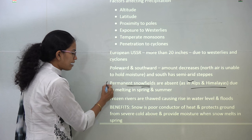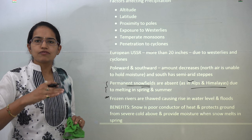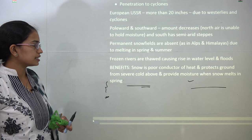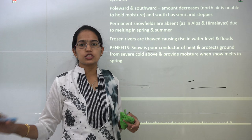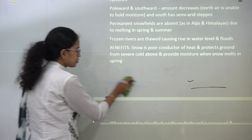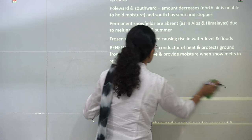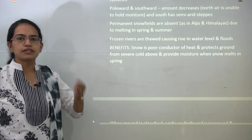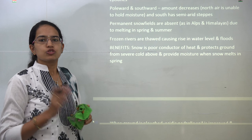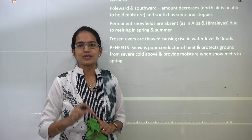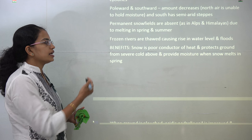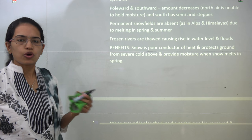During spring and summer, melting occurs, and the rivers that were frozen experience a change in water level — thawing takes place. So you would have seasonal floods in this region. Since this region is snow-covered, there are benefits: snow is a poor conductor of heat, which protects the ground from extreme weather temperatures and extreme cold above the region. It also provides moisture when the snow begins to melt in the spring season. The reason there are no permanent snow fields is because of the melting of rivers during spring and summer, which produces moisture through thawing.